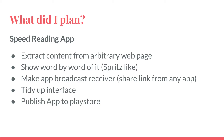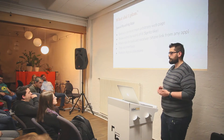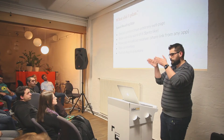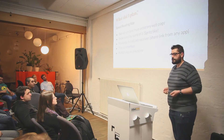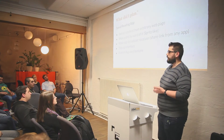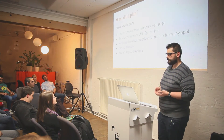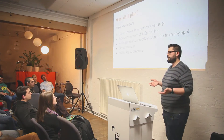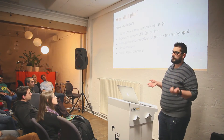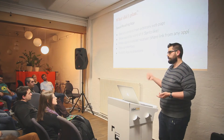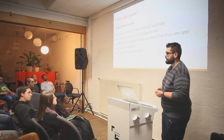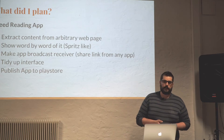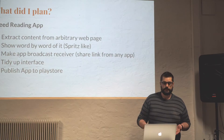What did I plan? I wanted to write a speed reading app. I don't know if anyone knows Spritz — it's very nice. It shows word by word, centered and adjusted so that you can read as fast as possible. I wanted to extract content from an arbitrary web page in the app itself. The main goal was to make it compatible with other apps, so if I'm in the browser or in Feedly, I can hit share, open my app, and speed-read the content. Then I wanted to tidy up the interface and publish it in the Play Store.